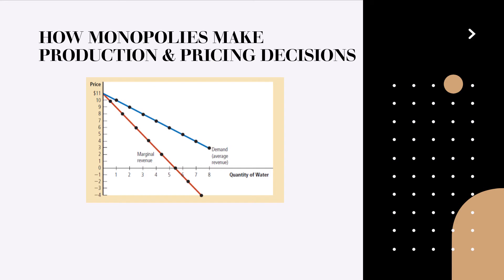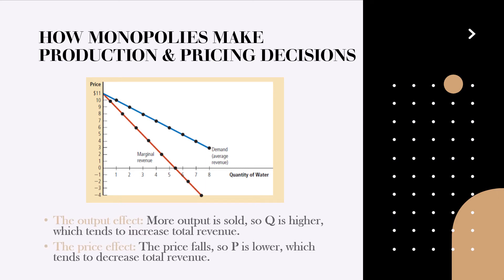Now the demand curve shows the quantity affects the price of the good. The marginal revenue curve shows how the firm's revenue changes when the quantity increases by one unit. Because the price on all units sold must fall if the monopoly increases production, marginal revenue is always less than the price. And here it is important to remember two important effects.